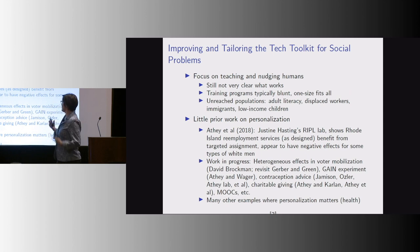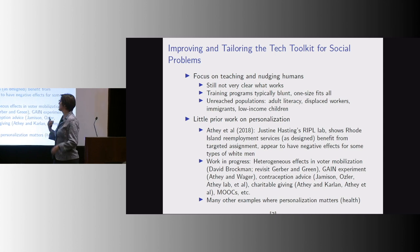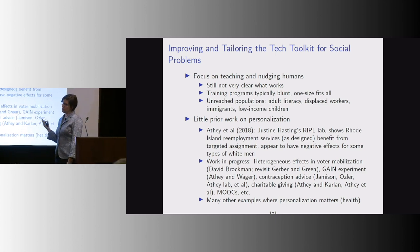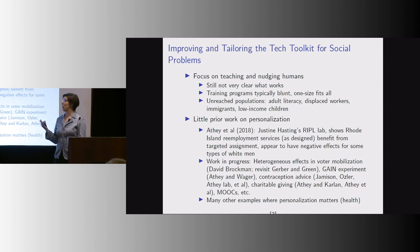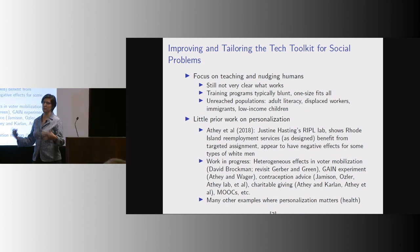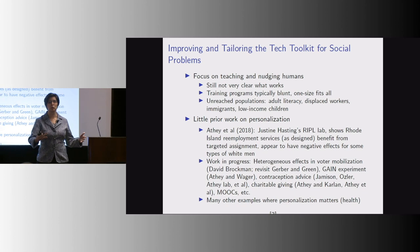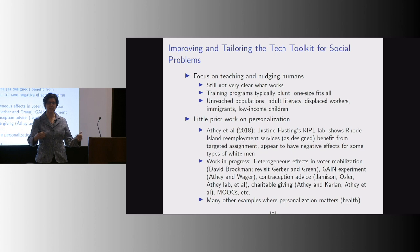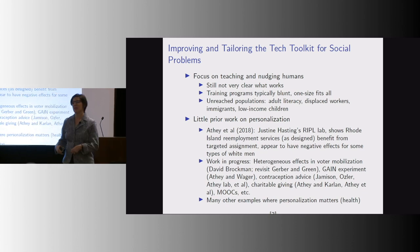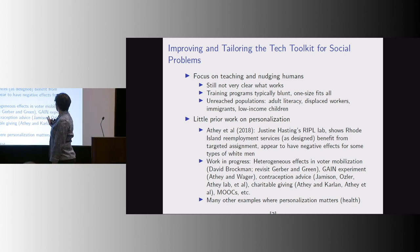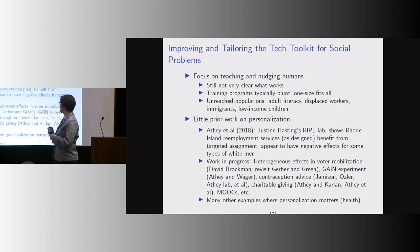Focusing on this category of technologies and problems — teaching and nudging humans — the problem is it's still not clear what works. Training programs, like if somebody is unemployed and you send them to a resume-writing workshop, are very one-size-fits-all. It's not surprising they have modest effects because they're really not very good. And so we have all these unreached populations where we think it could have really mattered to customize the intervention.